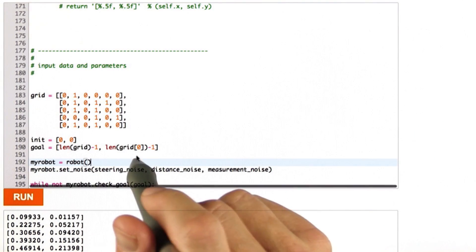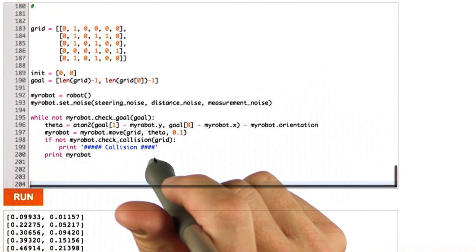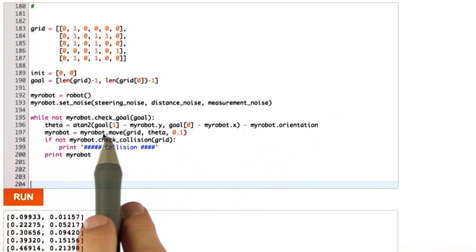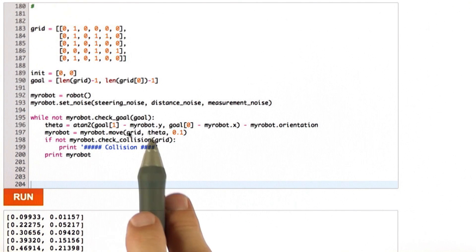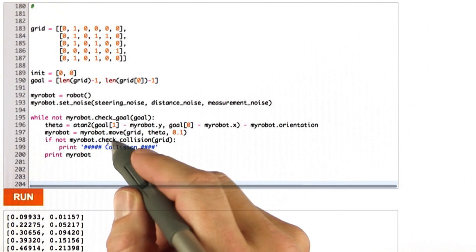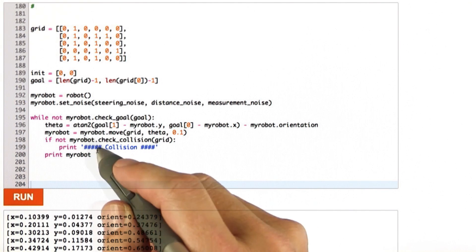In the version that I implemented for you, the controller does something very, very different. It actually chooses as the control objective to head straight to the goal using the A102 function, executes the action at a speed of 0.1, and then reports a collision whenever the robot is moving.